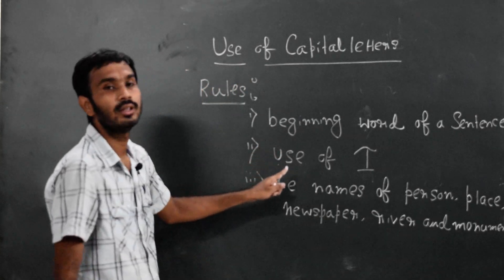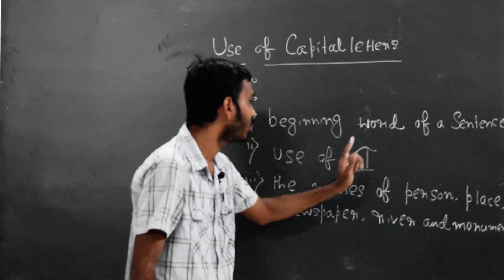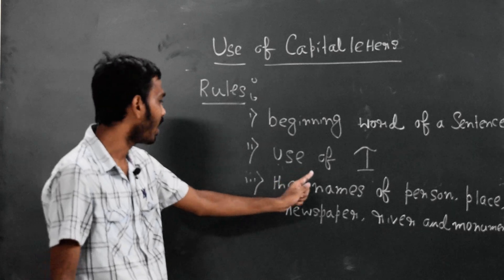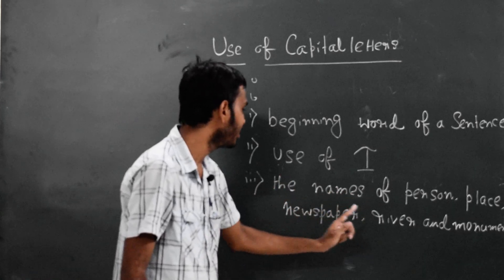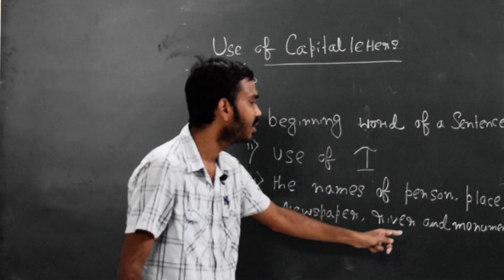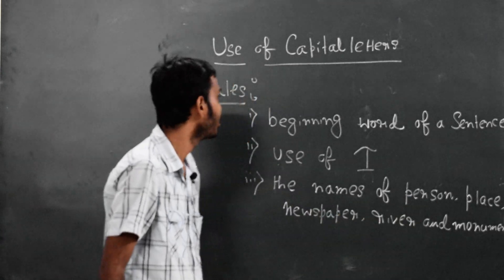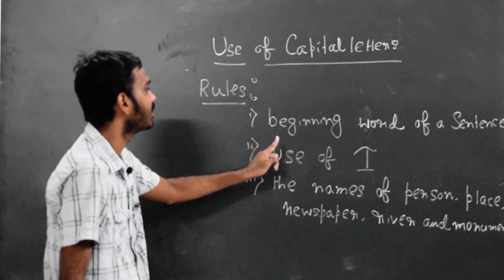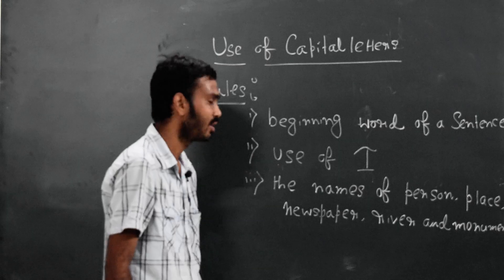Three rules are there: the beginning word of a sentence, use of 'I', and the names of person, place, newspaper, river, and monuments. First, I am going through the beginning word of a sentence.